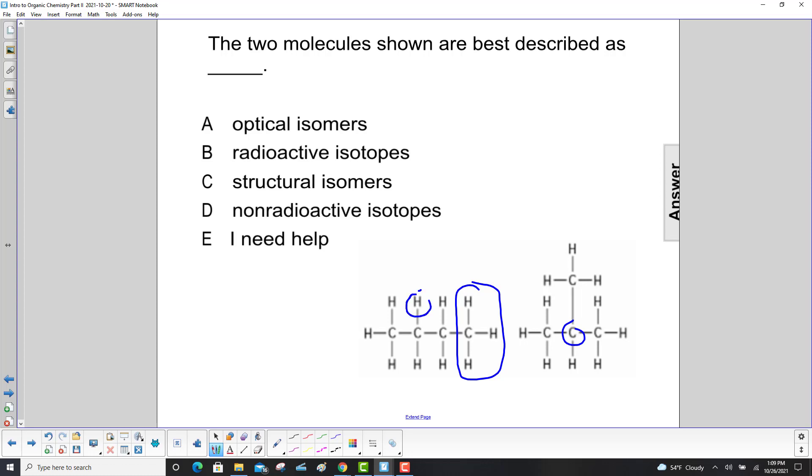Second carbon, we took this hydrogen, put it at the end, and moved this guy to replace it. So we have the CH3 group on that second carbon, and we have the hydrogen at the end.